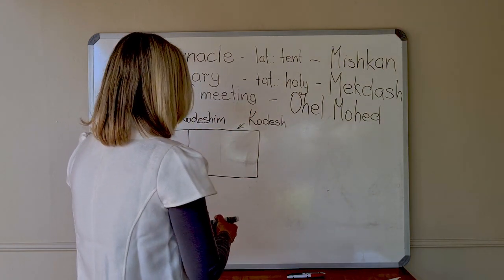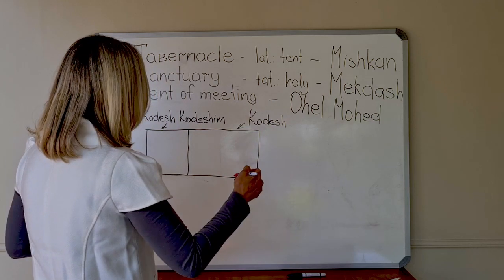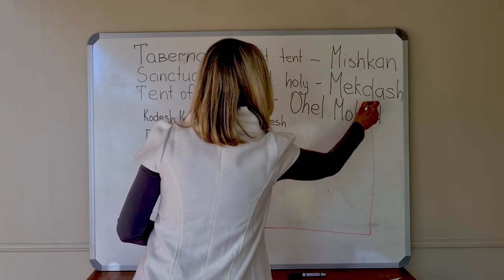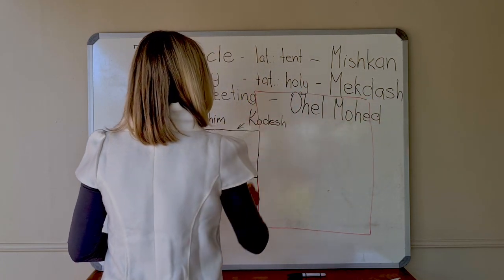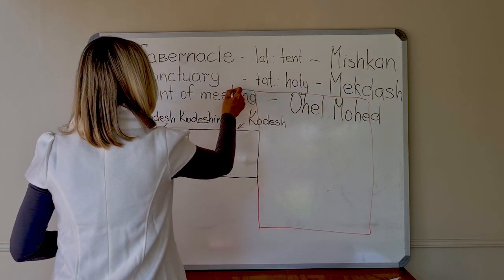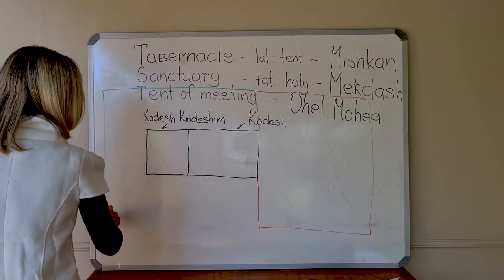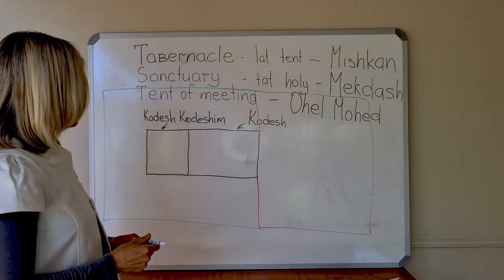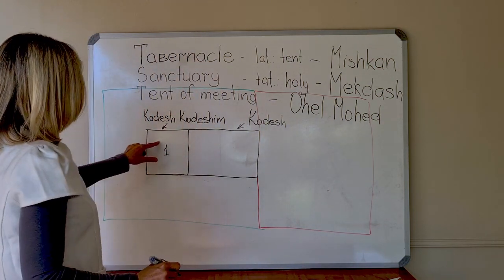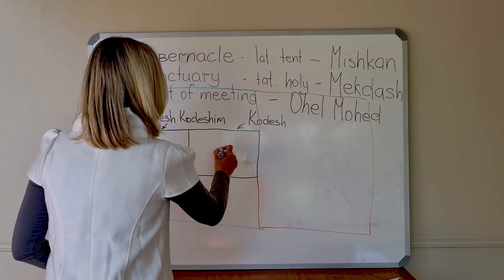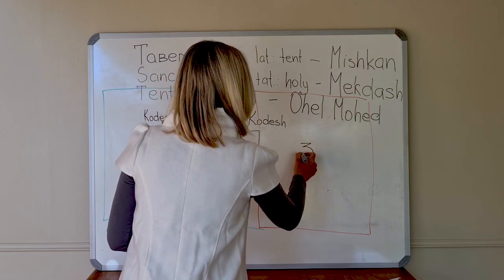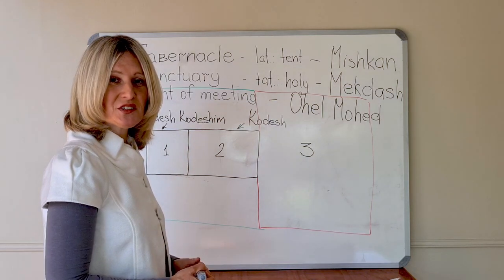The court of the sanctuary was much bigger. So these are the three parts of the sanctuary: number one, Kodesh Kodeshim — Most Holy Place; number two, Kodesh — Holy Place; and the third one is the Court of the Tabernacle.